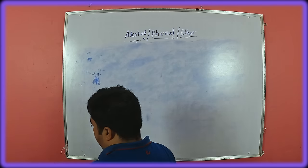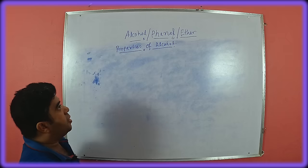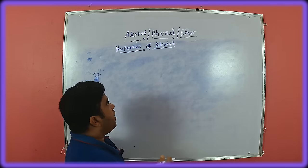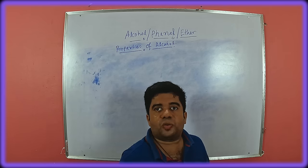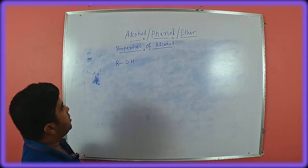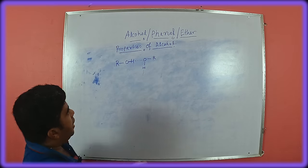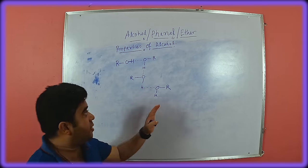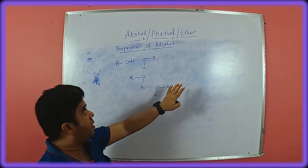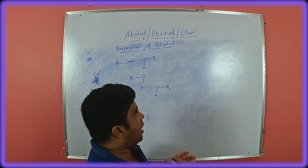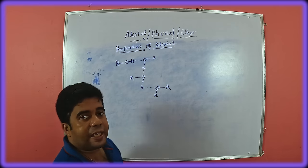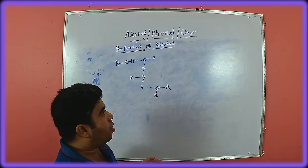Now we will see properties of alcohol. Alcohols have higher boiling points. The main reason is that alcohol can form intermolecular hydrogen bonding. R-OH forms hydrogen bonding with other alcohol molecules. This intermolecular hydrogen bonding makes alcohol exist in liquid form and gives alcohol a very high boiling point compared to alkanes or alkenes of the same molecular weight.